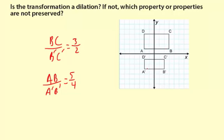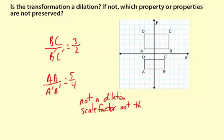Because AB is 5 and A'B' is 4. Well, these ratios are not the same. So this is not a dilation. And the reason why is the scale factor is not the same for every segment.